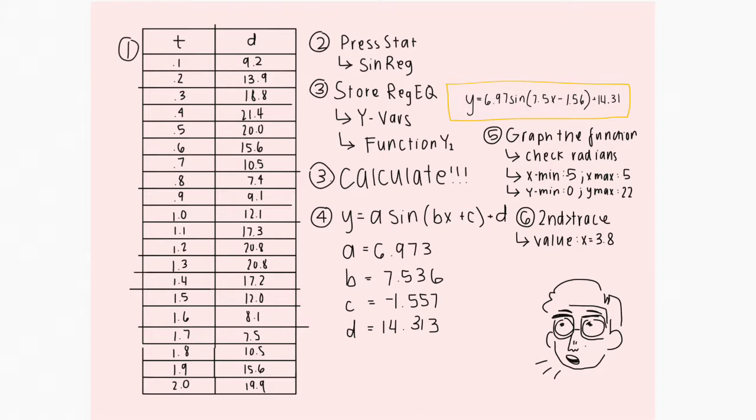So our xmin should be negative 5, max should be 5, ymin should be 0, and ymax should be 22, just to get a comfortable view.